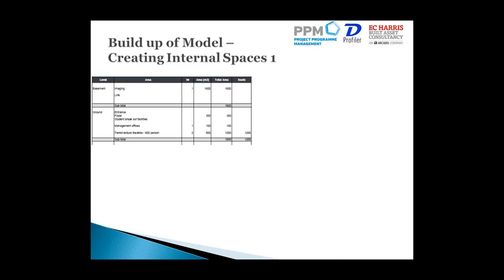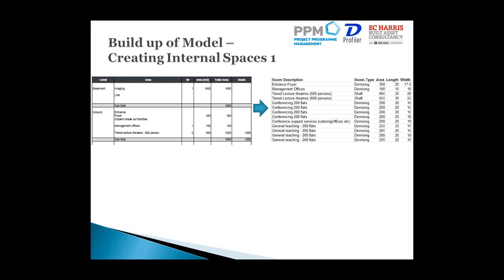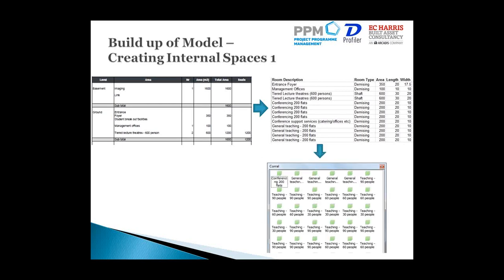After creating the basic box, we looked at internal spaces. From the feasibility, we had a basic list of accommodation — areas and seat numbers, being a higher education facility. We took that into Excel, worked out dimensions for the spaces, then imported it into the profiler into the corral, which gives you 3D images of all the rooms you specified. This was very easy even for a cost manager — the process was literally an hour or so to go from an initial schedule to having 3D models of all the different room types.